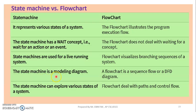The state machine is used for a live running system, while the flowchart visualizes branching sequences of a system. The state machine is a modeling diagram, whereas the flowchart is a sequence flow related to a DFD — Data Flow Diagram. The state machine can explore various states of a system, while a flowchart deals with path and control flow. That is the difference between state machine and flowchart.